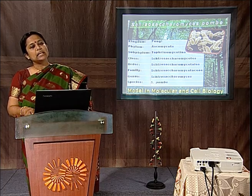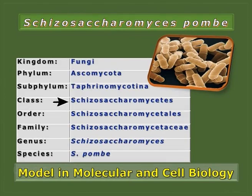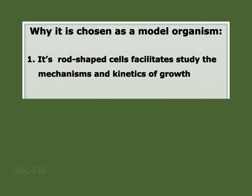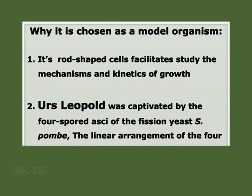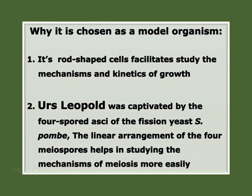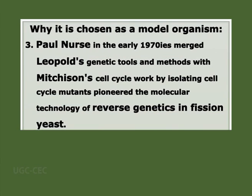The next important yeast is Schizosaccharomyces pombe. It belongs to class Schizosaccharomycetes, order Schizosaccharomycetales, family Schizosaccharomycetaceae, genus Schizosaccharomyces, and species pombe. It is a model widely used in molecular and cell biological studies. Its rod-shaped cell facilitates the study of mechanism and kinetics of growth. The linear arrangement of its four meiotic spores in the ascus helps in studying the mechanism of meiosis. Genetic tools and methods developed since 1970 enabled study of cell cycle regulation and reverse genetics.